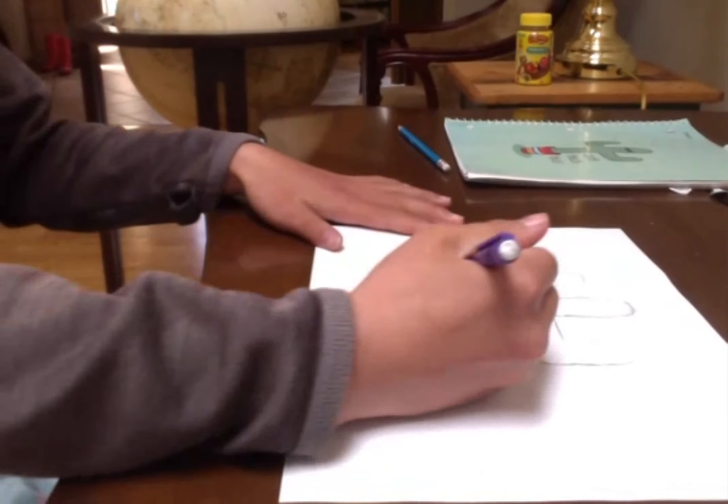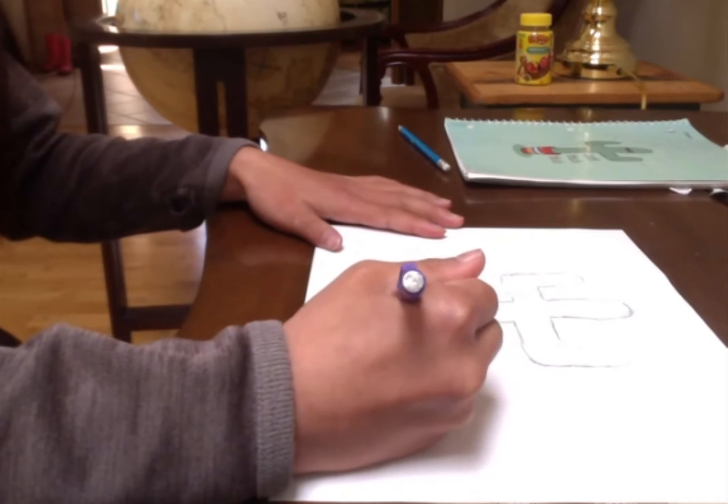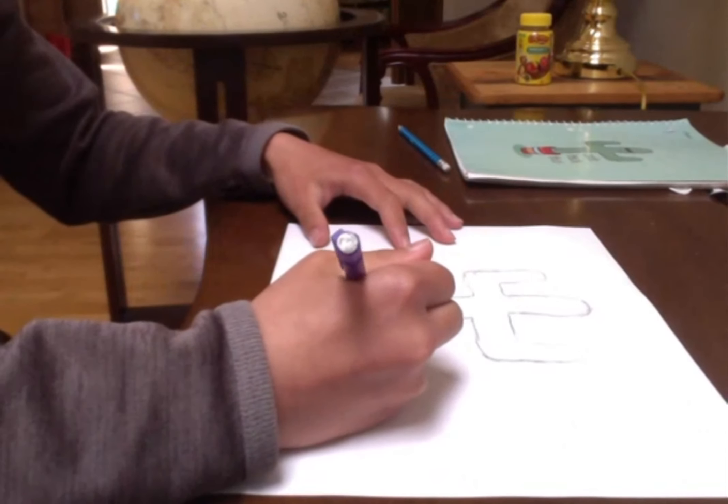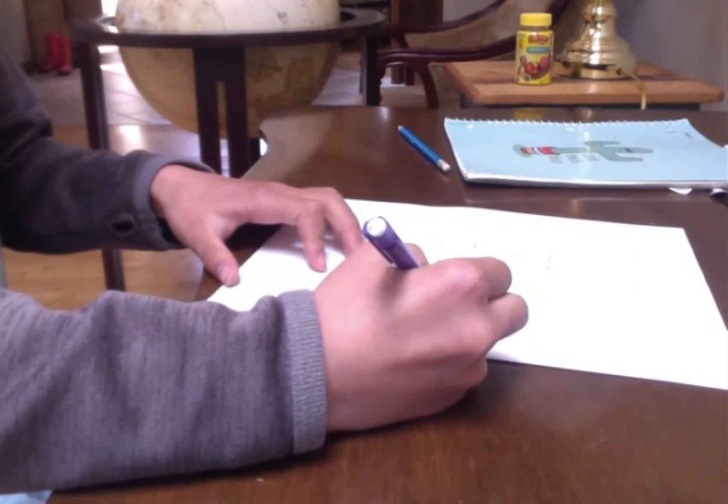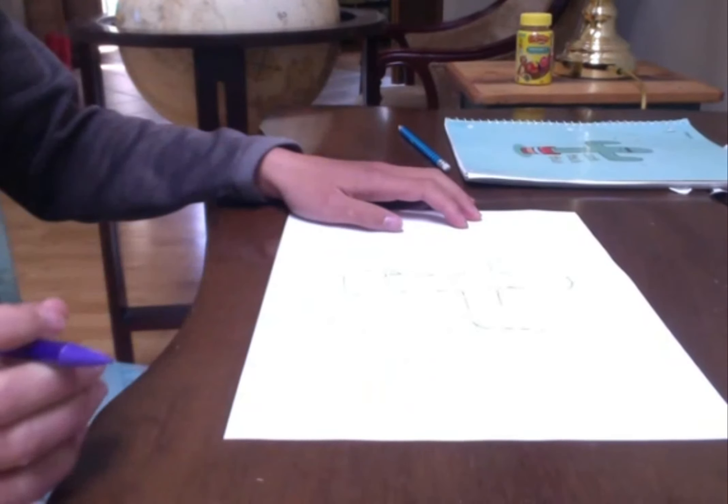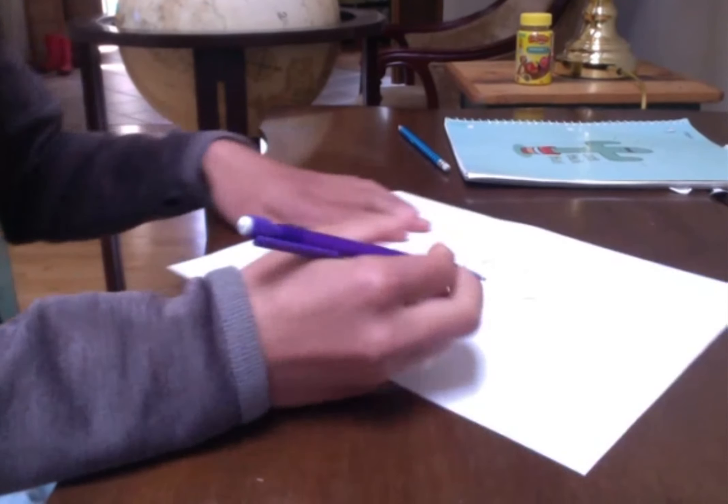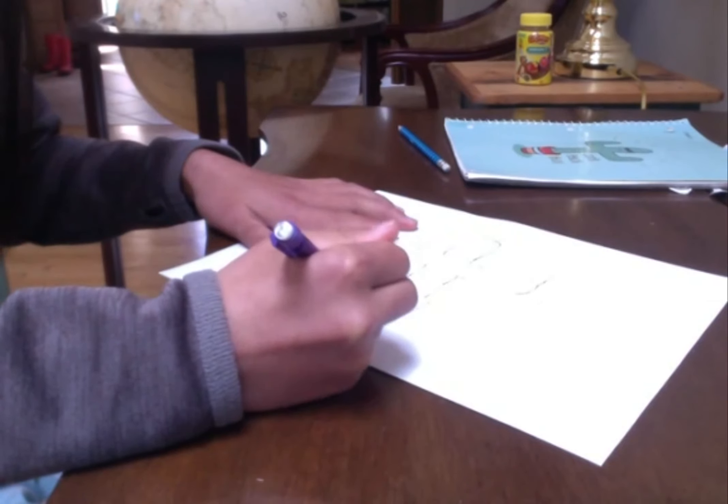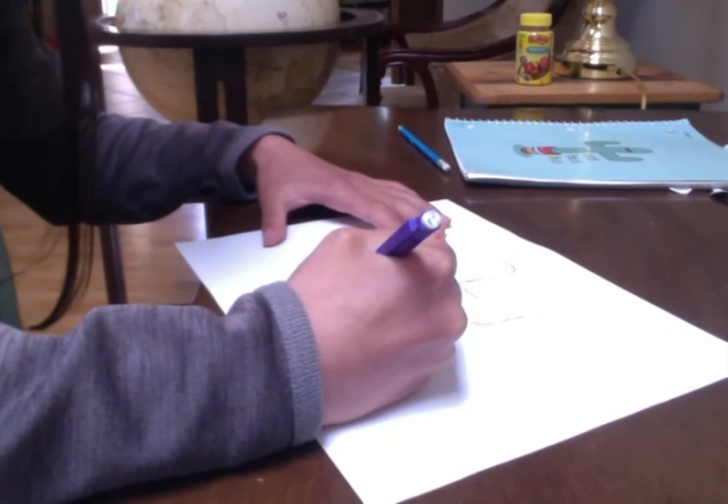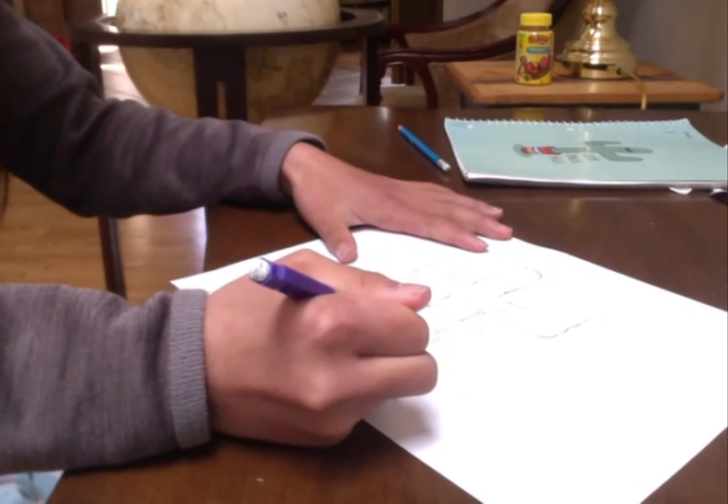So then you're going to make a line down, but slanted just a little. So you're going to make a line down like that, and then you cross it like that, and then you make a cross like that one there. And then you're going to make another cross like that.